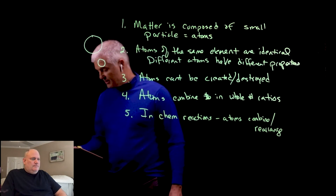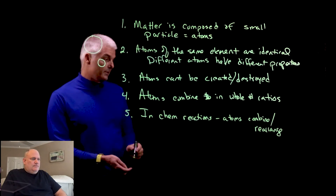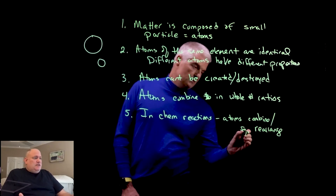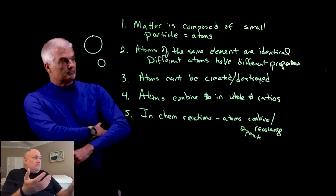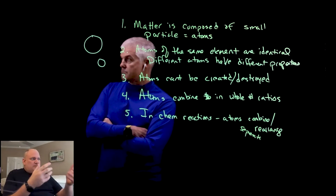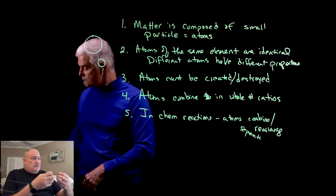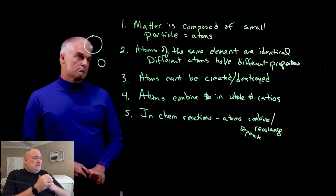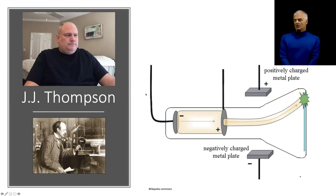Point five: in chemical reactions, atoms combine, separate, and rearrange. The question was how do atoms interact. Sure, atoms exist — but what do they actually do? And Dalton said they can connect with each other and form new things. That's essentially what this last point says.